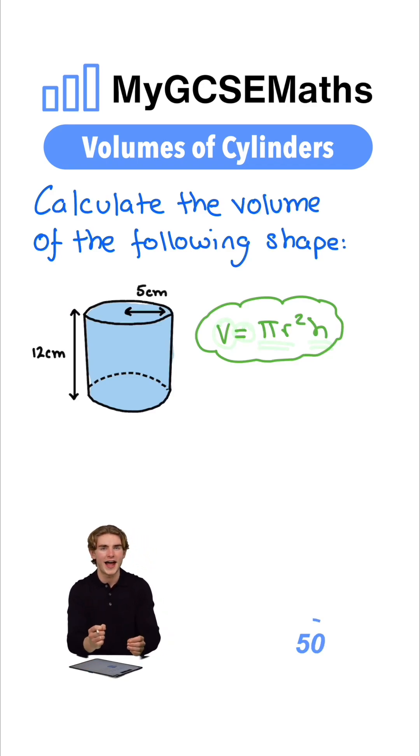Now, where does this formula come from? The πr² part works out the area of the circle on top, and the height multiplies it by the height of our cylinder. This is just like any other prism where we multiply the area of the end face by our height.